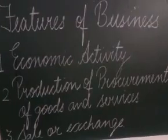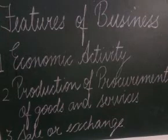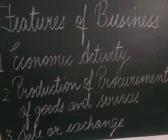Now we are coming to the features of business, which can also be called characteristics of business. The very first feature is that business is an economic activity, because it is done with the motive to earn profit — every businessman runs their business with that motive. The second feature is production or procurement of goods and services: in business, a person is either producing goods and services or buying from a third party in order to resell to consumers.